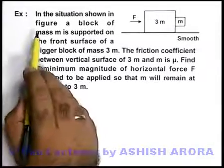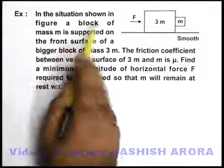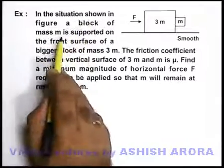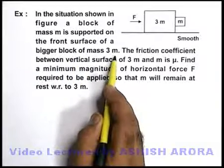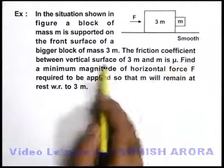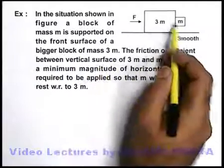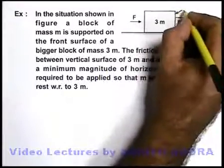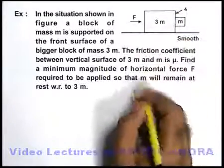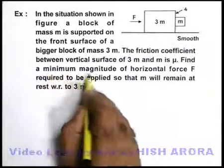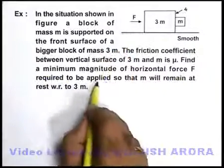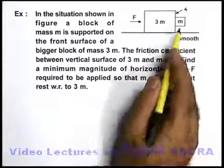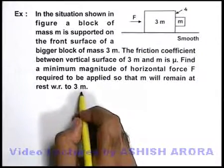In this example, in the situation shown in figure, a block of mass small m is supported on the front surface of a bigger block of mass 3m. The friction coefficient between the vertical surface of this 3m and m is μ. We are required to find the minimum magnitude of horizontal force F which is required to be applied so that small m will remain at rest with respect to 3m.